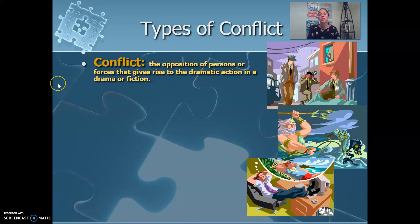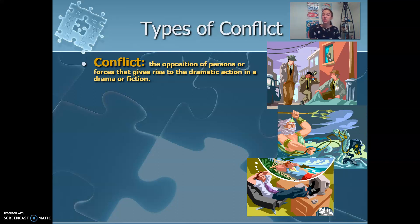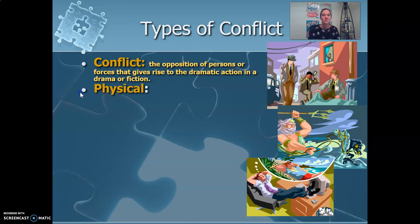So we're going to look at the different types of conflict. On that note catcher I showed you, you're going to start by listing them out. As I go, you're going to want to pause and list them out, and then on the other side of that column, you're going to find a picture or an icon that you think represents that type of conflict so it can help you remember what it means.